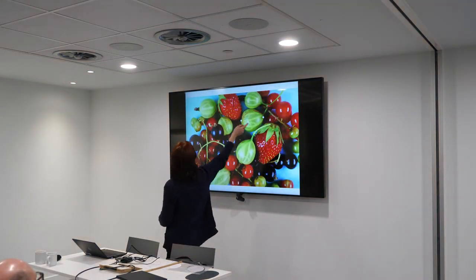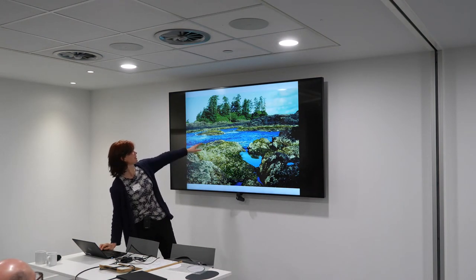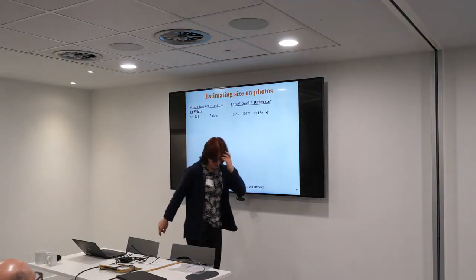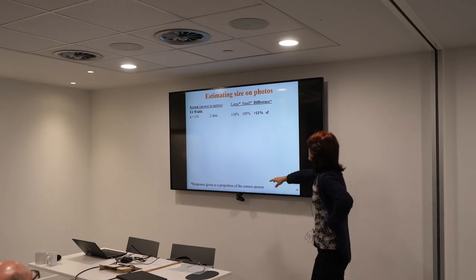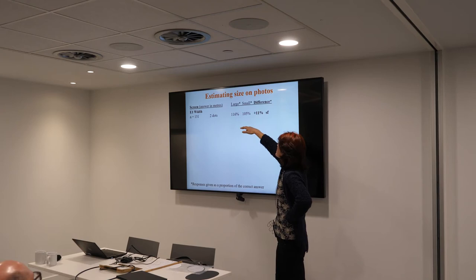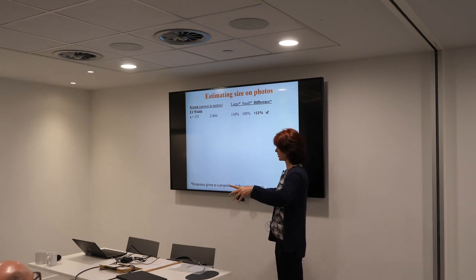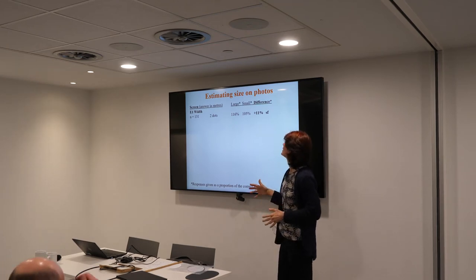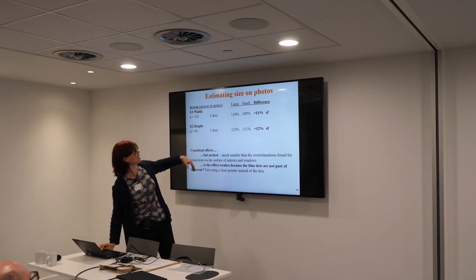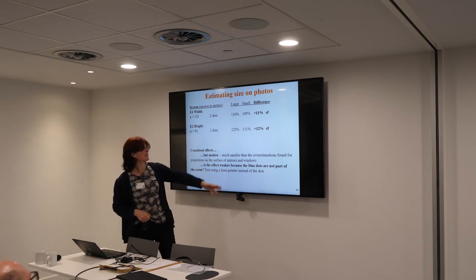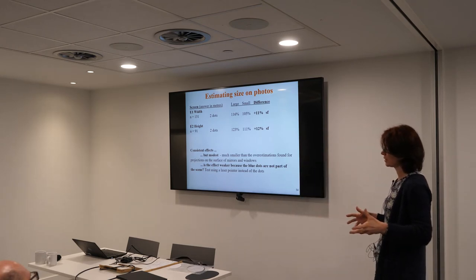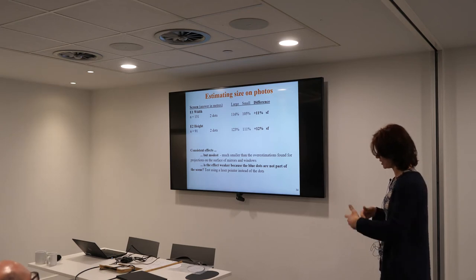People would estimate the distance between two dots — something like 1.7 metres apart versus 3.2 metres. I'm reporting this as a proportion of the correct answer. What I found to my surprise was that there was an effect: people estimated the distance between two dots on either side of an object in a large scene as about 11% larger than if the dots were placed on a small scene. I replicated that looking at height as well, with dots vertically aligned — very similar pattern of results.